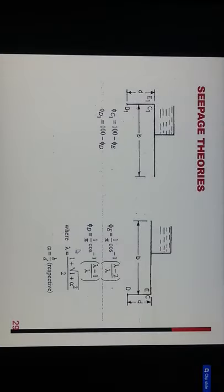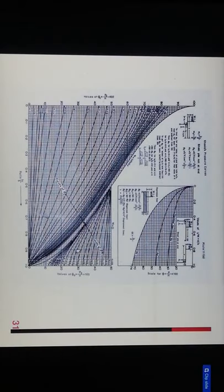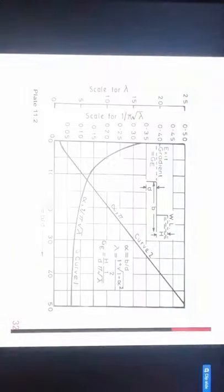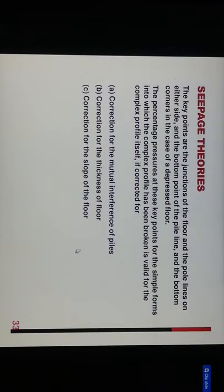This is CPS theories. This is the equation of CPS theories. This is the flow net chart and exit gradient curves. In CPS theory, the key points are the junctions of the floor and the pile lines on either side, the bottom point of the pile line, and the bottom corners. In the case of depressed floor, the percentage pressure at these key points for simple forms into which the complex profile has been broken is valid for the complex profile itself if corrected.